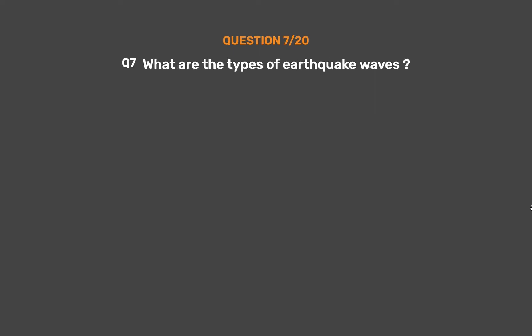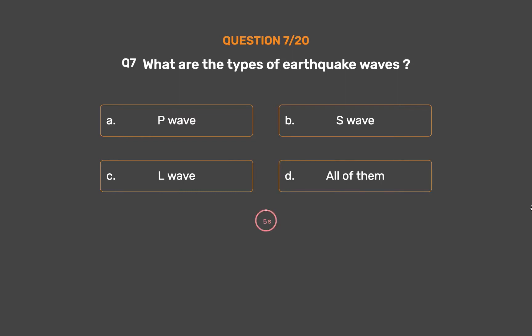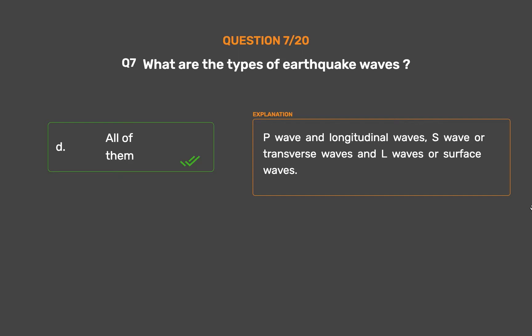Question No. 7: What are the types of earthquake waves? Option A: P wave. Option B: S wave. Option C: L wave. Option D: All of them. The correct answer is Option D: All of them. P waves are longitudinal waves, S waves are transverse waves, and L waves are surface waves.